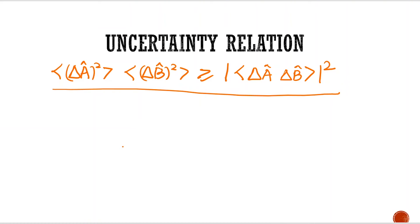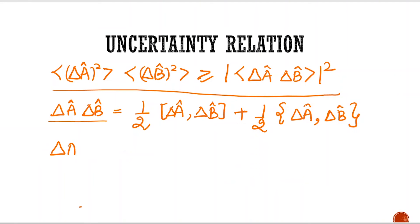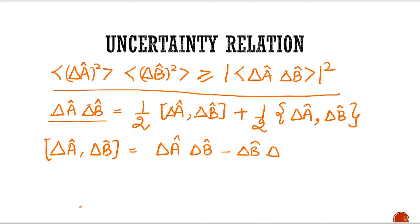Now we have to simplify the product of operators ΔA·ΔB. We can write it as one-half the commutator [ΔA, ΔB] plus one-half the anti-commutator {ΔA, ΔB}. If we open these, we get ΔA·ΔB.